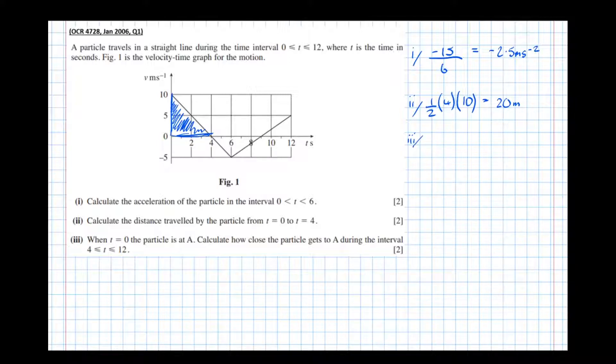Part 3. When t equals 0 the particle is at A. Calculate how close the particle gets to A during the interval 4 to 12.